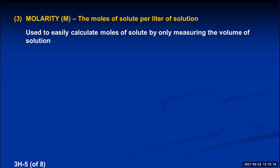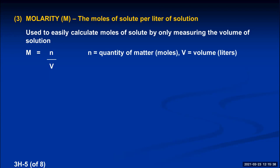Let's go through an example calculation. Written algebraically, capital M equals moles of the solute divided by liters of solution. The two quantities are n (quantity of matter, measured in moles) and V (volume, measured in liters). If you can calculate the moles of a dissolved solute and the volume of the solution in liters, you just divide them and that ratio is the molarity.